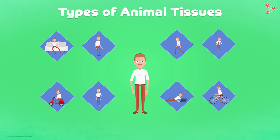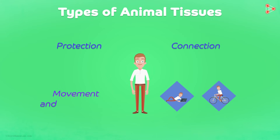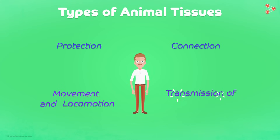So how do we study all these? Well, we don't need to worry. For simplicity, we would prefer dividing all the animal tissues into four major categories depending upon their functions — firstly for protection, then for connection, followed by movement and locomotion, and lastly for transmission of signals for quick and efficient work.